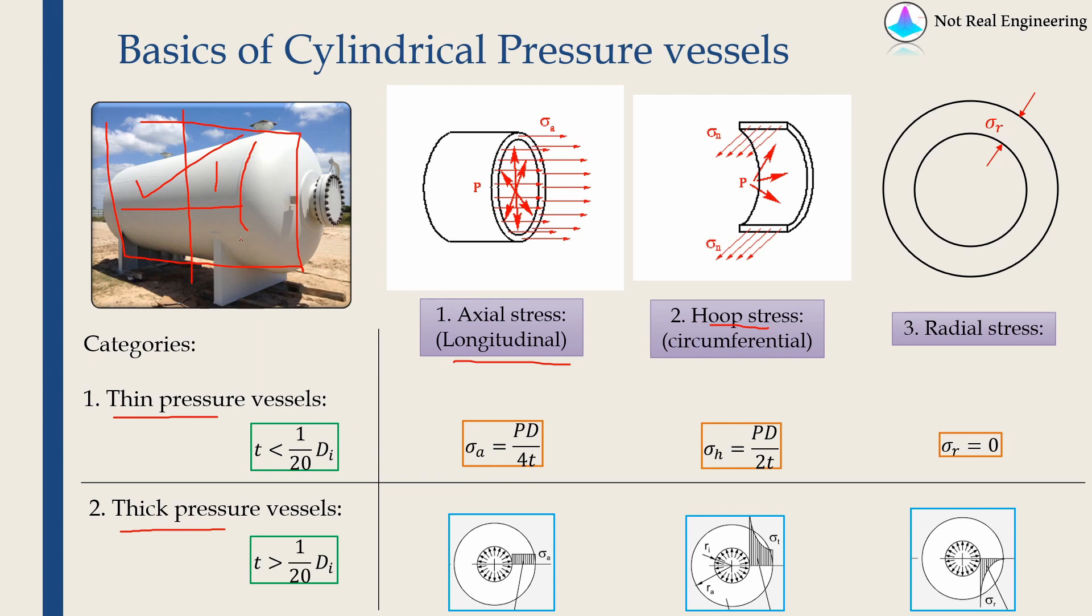when the thickness of the cylinder is very thin compared to diameter, we don't observe any radial stress. So radial stress is zero. And hoop stress and axial stress are constant over the thickness, and those can be found out by these two formulas, which are very simple formulas.